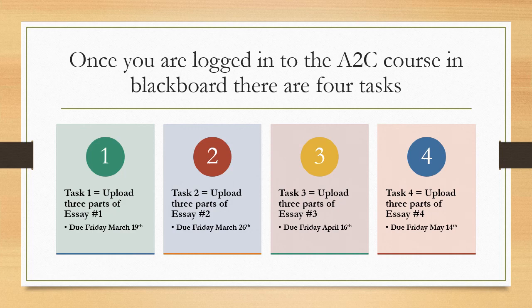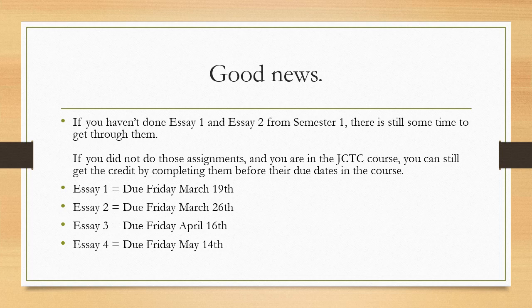Once you're logged into the A2C course in Blackboard, there are four tasks. Each task asks you to upload three parts of one of the four essays. Essay 1 is due March 19th — we did the first essay at the beginning of the year, but in the JCTC class the first one is due March 19th. Essay 2 is due March 26th. Essay 3 is due April 16th. Essay 4 is due May 14th on this website. If you haven't done essays 1 and 2 from semester 1 but you're signed up for A2C credit, there's still time — you can still get credit by completing them before their due dates.